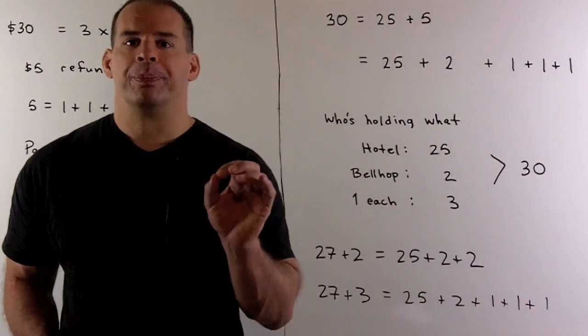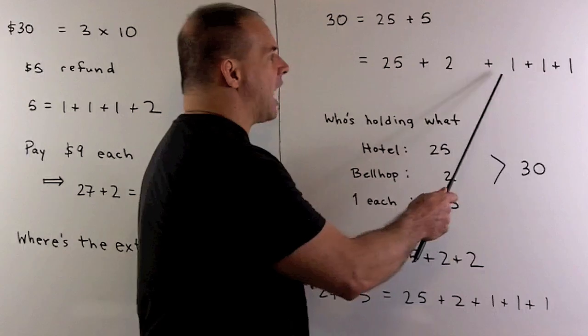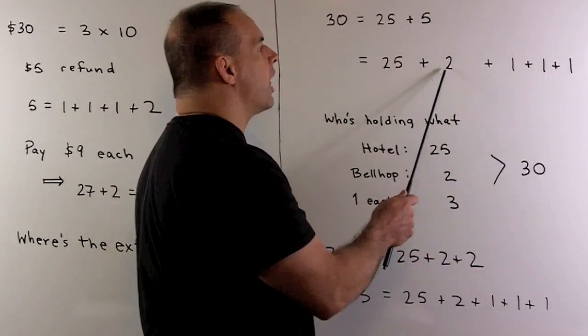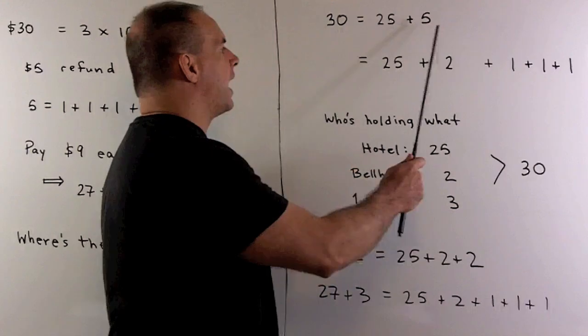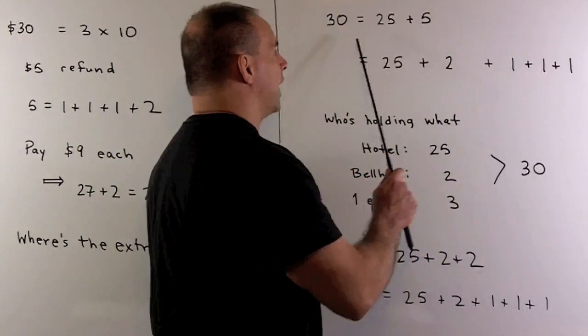Once the guests get to $5, they decide they're going to keep $1 each, and then they're going to give $2 to the bellhop. So we see here at each stage, we have $30 at each step.